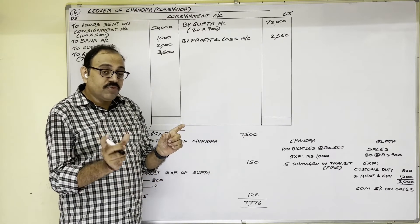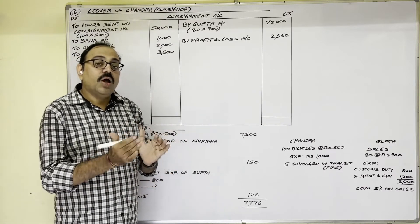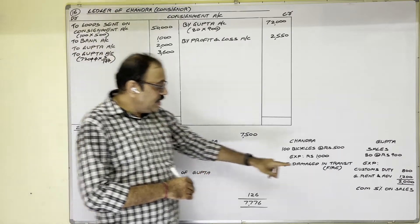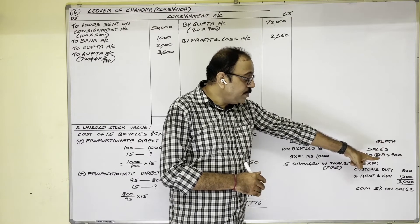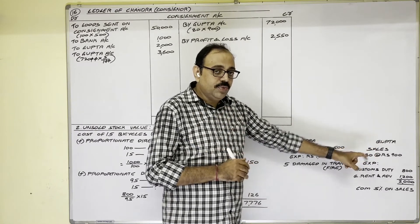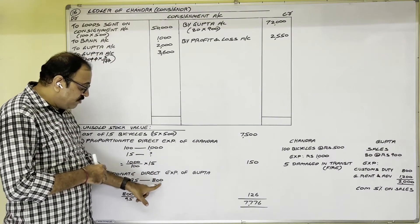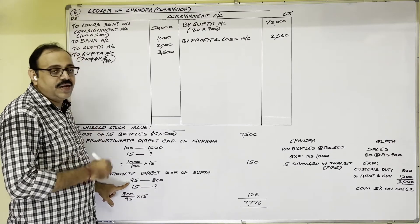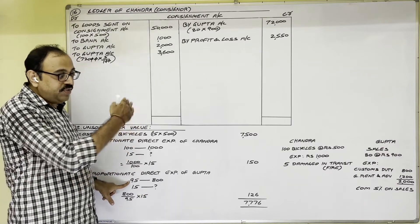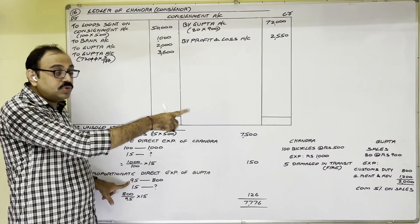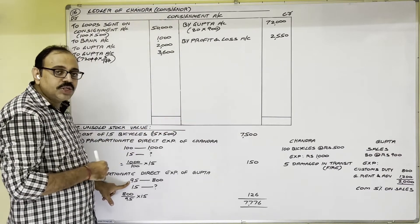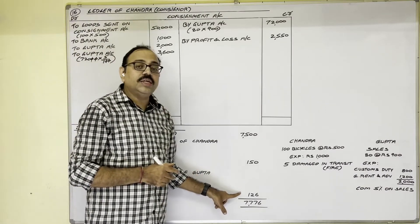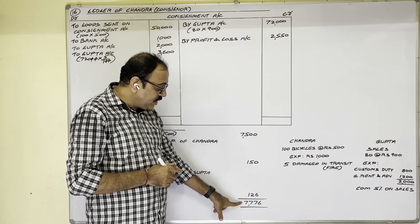We also add consignee's direct expenditure proportionately. Custom duty 800 was spent on 95 bicycles (not 100, because only 95 were received). For unsold stock of 15 bicycles: 800 ÷ 95 × 15 = 126 rupees. Adding all three: 7500 + 150 + 126 = 7776 rupees. This is the unsold stock value.